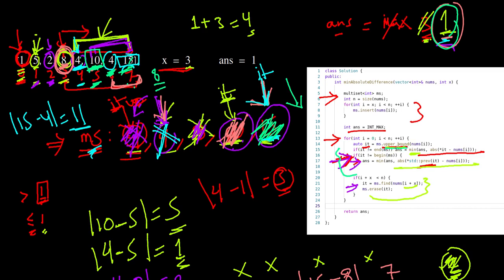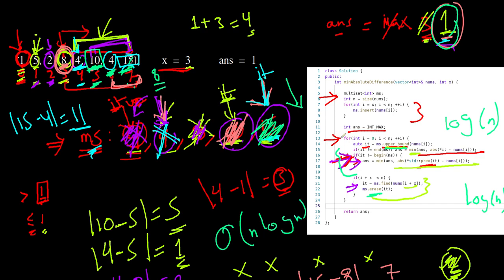Notice that upper_bound is an O(log n) operation and erase is also O(log n). So the overall time complexity of the whole loop is O(n log n) — from the loop itself combined with O(log n) from both erase and upper_bound.